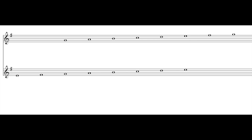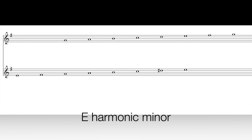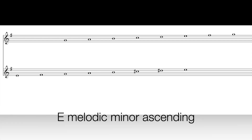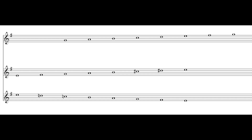Here is the natural minor scale of E minor: E, F sharp, G, A, B, C, D, E. If we sharpen the seventh note to D sharp, we have E harmonic minor. And to create E melodic minor, we sharpen the sixth note to C sharp as well on the way up. But we remember to cancel those accidentals — the C sharps and D sharps — when we go on our way down.